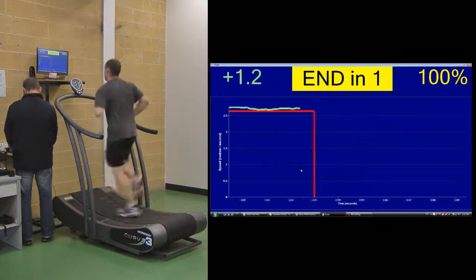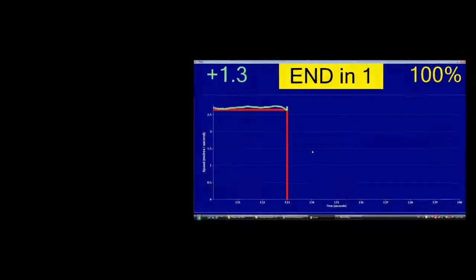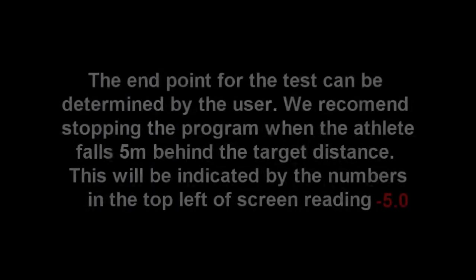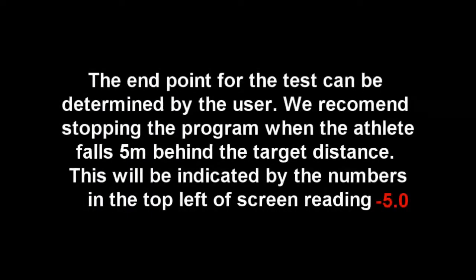The test then moves into Stage 3. We're going to stop the trial here because it would be a very long trial to show on a video, but you would let them run until they fell a certain distance behind. The end point of the test can be determined by the user. We recommend stopping the program when the athlete falls five metres behind the target distance, indicated by the numbers in the top left of the screen reading minus 5.0.